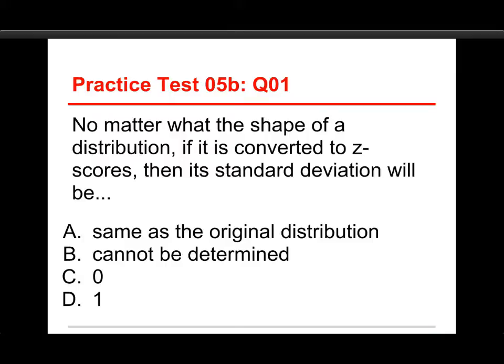The first question on this test is: no matter what the shape of a distribution, if it is converted to z-scores, then its standard deviation will be A, the same as the original distribution, B cannot be determined, C, 0, or D, 1. Well, the answer to this one is 1.